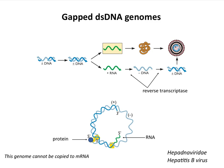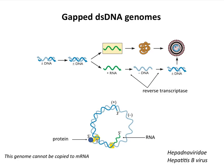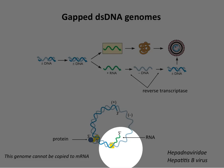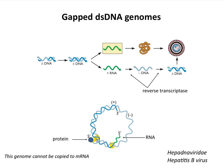Now let's turn to the gapped double-stranded DNA genomes — the hepatitis B viruses. When these were discovered they were thought to be completely weird: you have a double-stranded circular DNA molecule with a gap, so it's not completely double-stranded. There's also a little piece of RNA attached to one of the strands and a protein. So this has lots of weird modifications, but all of these make sense in terms of how the virus genome replicates.